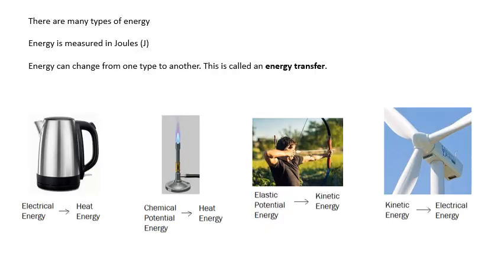There's many types of energy. Energy is measured in joules. There's heat energy, thermal energy, chemical potential energy, elastic potential energy, gravitational potential energy. Potential means stored energy. Then there's kinetic energy, electrical energy, lots of different types of energy. Energy can change from one type to another, and that's called an energy transfer.